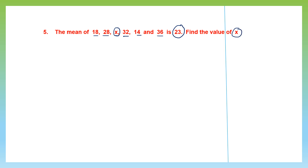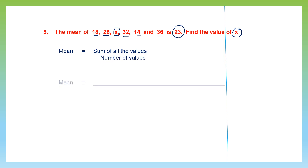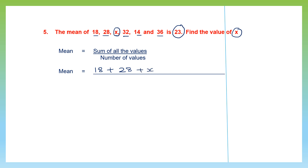Let's do it the normal way. Mean equals sum of all the values divided by the number of values. The sum will be 18 plus 28 plus x plus 32 plus 14 plus 36. Counting the values: 1, 2, 3, 4, 5, and 6 — so we're going to divide this by 6.